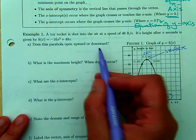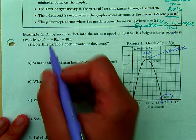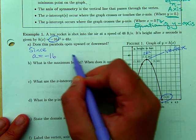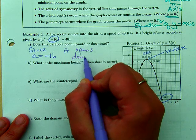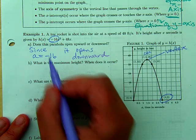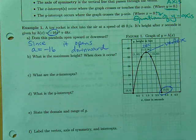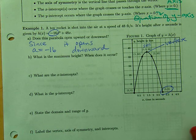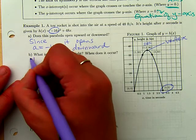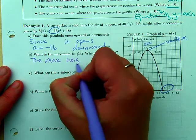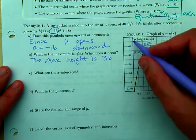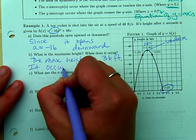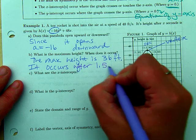Does the parabola open upward or downward? We can see that it opens downward, but it also opens downward because since a equals negative 16, it opens downward. That negative coefficient of x squared, whenever a is negative, the parabola is going to open downward. What is the maximum height? When does it occur? The maximum height is 36 feet. It occurs after 1.5 seconds.